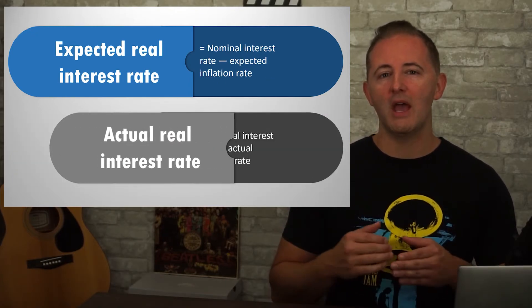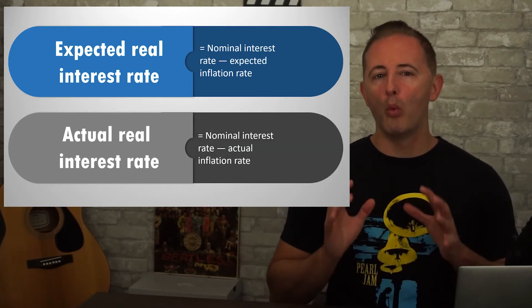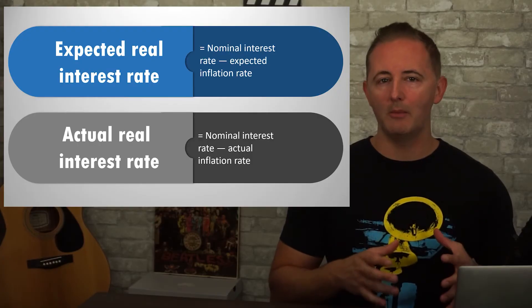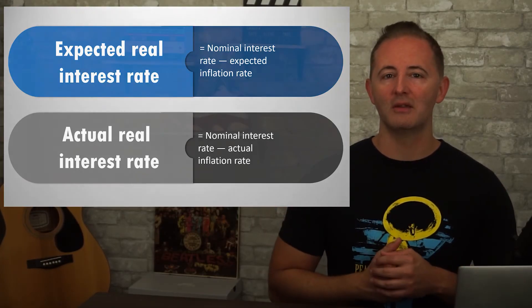The actual real interest rate can only be calculated after the fact, once the inflation rate is known. We calculate it the same way: the actual real interest rate is equal to the nominal interest rate minus the actual inflation rate. From earlier in the course, you might remember that we made a big deal about expected and unexpected inflation. Higher than expected inflation benefits borrowers, and one reason for that is because it reduces the actual real interest rate. By the way, we can class this up using some Latin: ex ante for expected and ex post for actual. In college econ books, you'll probably see these equations expressed that way.